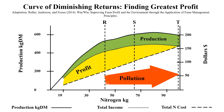As Ridler observes, the tipping point R is where marginal costs equal marginal income, pinpointing the optimum financial return — but only if farmers can make money from this additional pasture without adding other costs, such as extra livestock to eat the grass rather than improving the performance of existing animals.